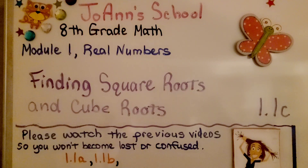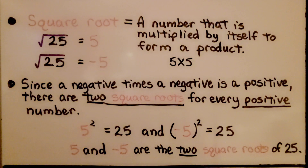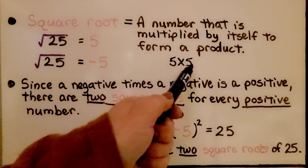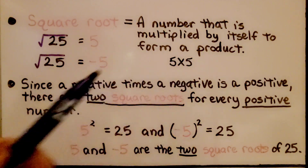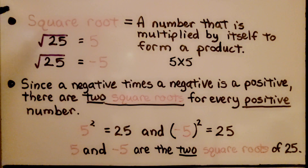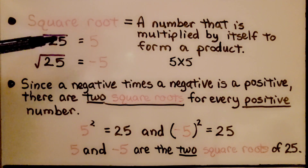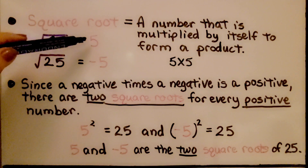Lesson 1.1c: Finding Square Roots and Cube Roots. A square root is a number that is multiplied by itself to form a product, like 5 times 5. 5 is multiplied by itself, and we get 25. So the square root of 25 is equal to 5.